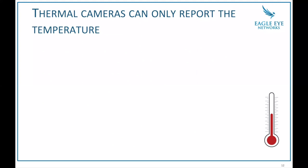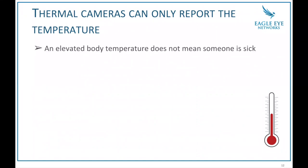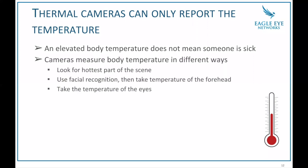Here's some scientific context. Thermal cameras can only report the temperature. Just because somebody has an elevated body temperature doesn't mean they're sick — there are a lot of different reasons why somebody might be warm. Maybe they've been out exercising, laying in the sun, or sitting in their car with the heater blasting on their face for 20 minutes. There are a lot of reasons why somebody could have a warm forehead and not be sick.